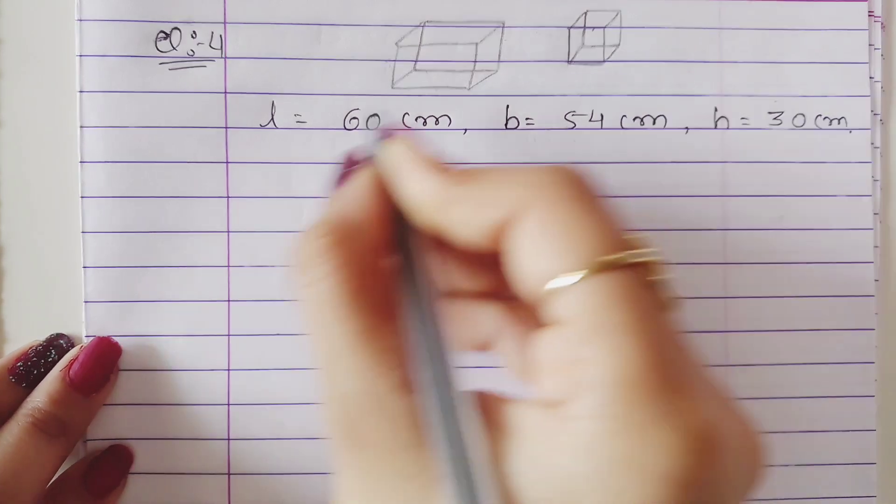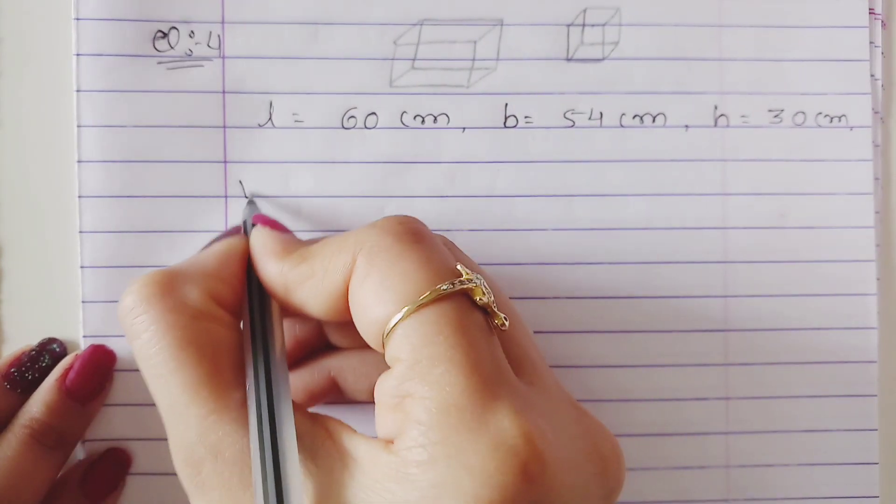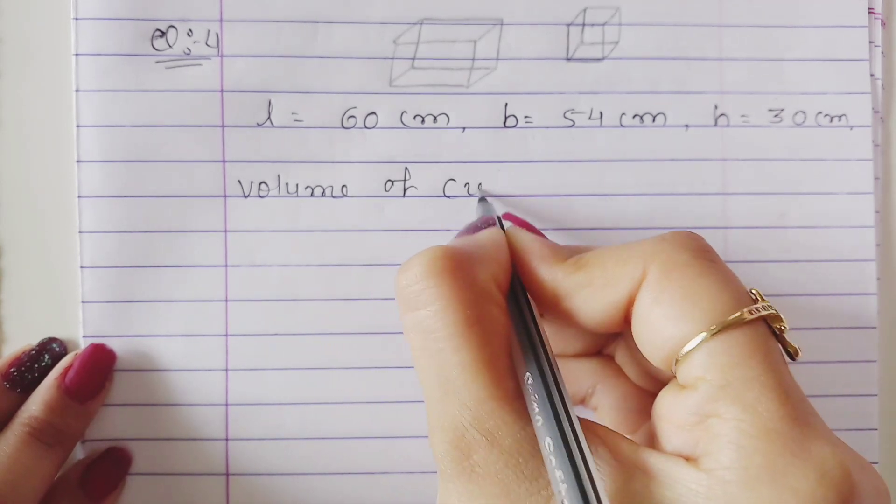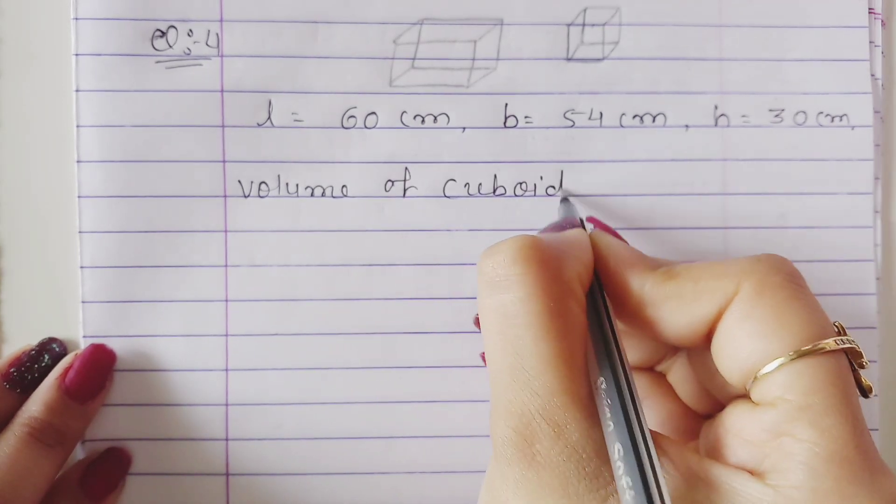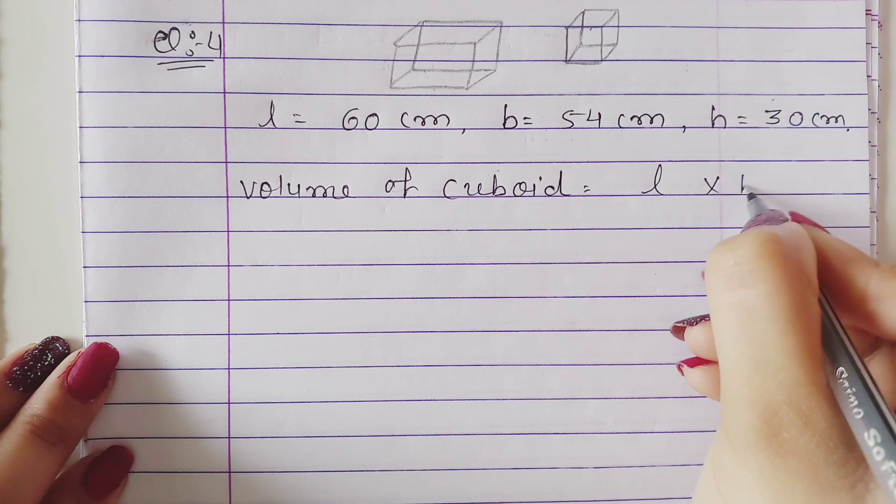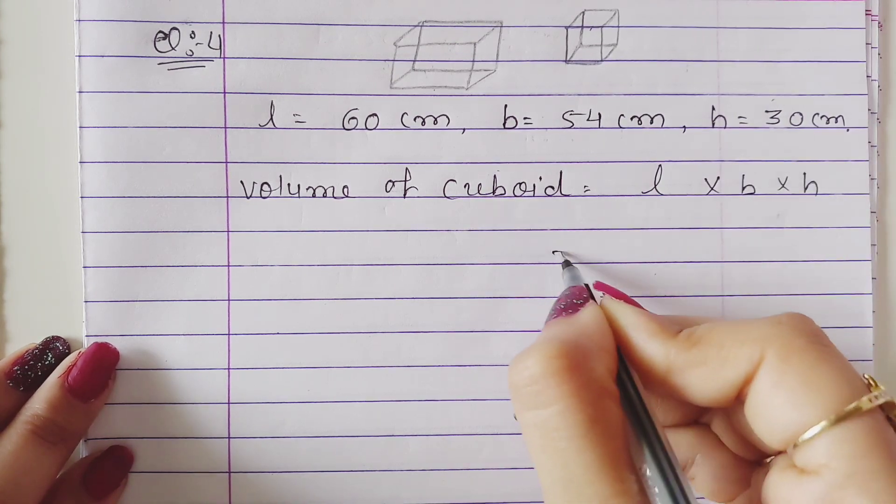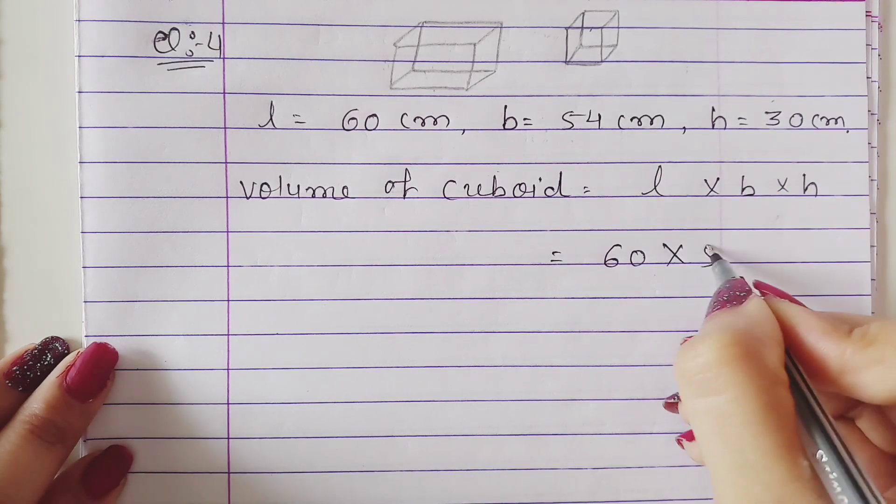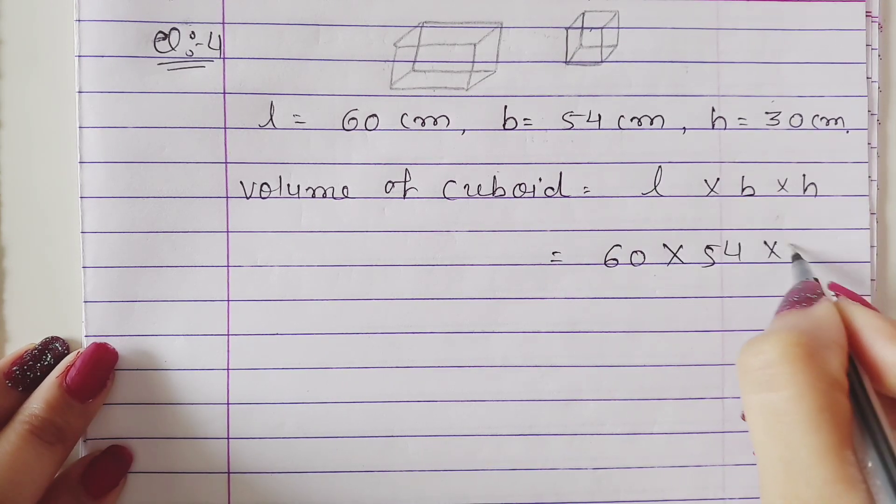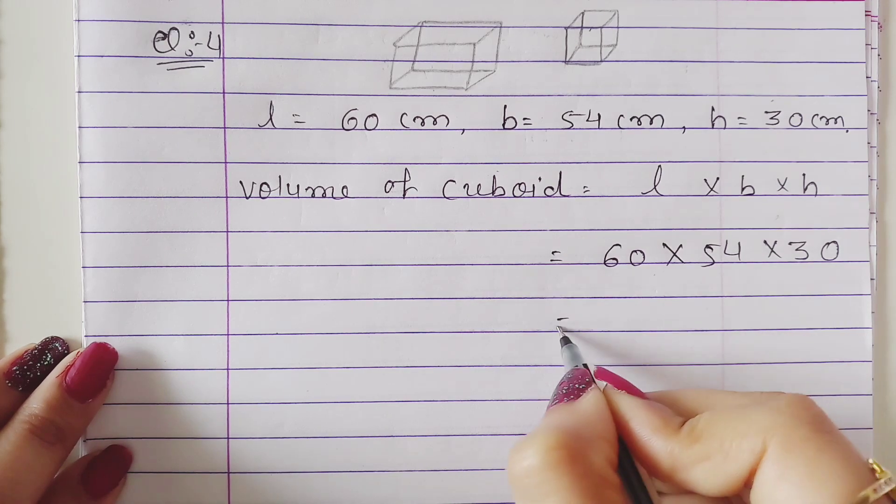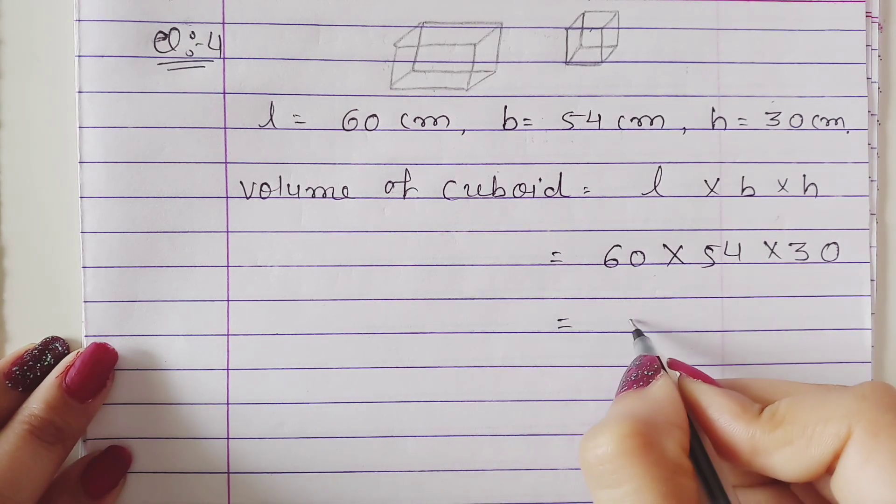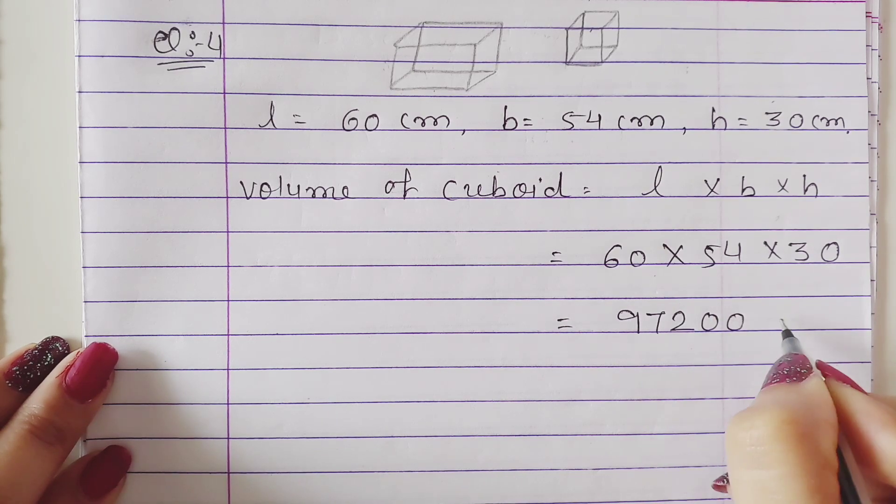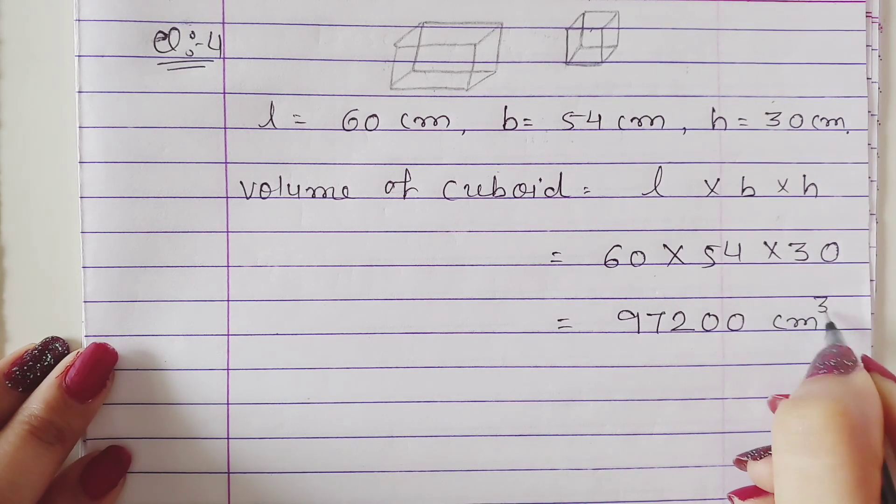Now we will find the volume of cuboid. Volume of cuboid is equal to L into B into H. Length is 60, breadth is 54, and height is 30. If we multiply it, this answer will be 97200 cm³.